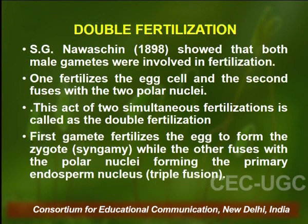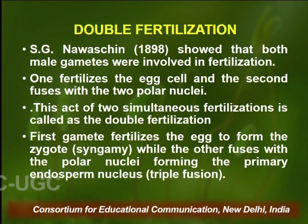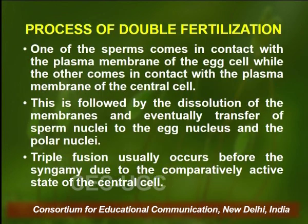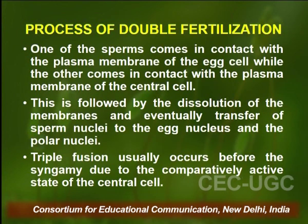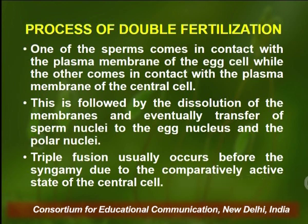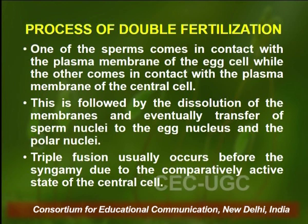This act of two simultaneous fertilizations is called double fertilization. The first gamete fertilizes the egg to form the zygote — this is called syngamy. The other fuses with the polar nuclei forming the primary endosperm nucleus — this is triple fusion. One sperm comes in contact with the plasma membrane of the egg cell, the other with the plasma membrane of the central cell, followed by dissolution of membranes and transfer of sperm nuclei. Triple fusion usually takes less time compared to syngamy.